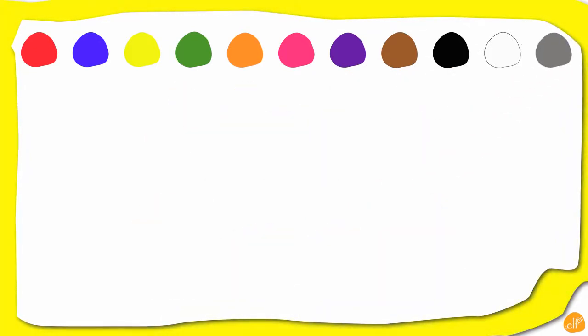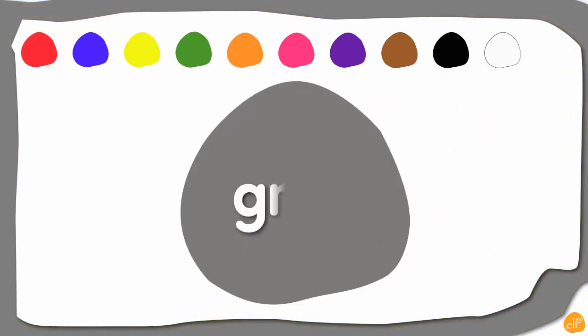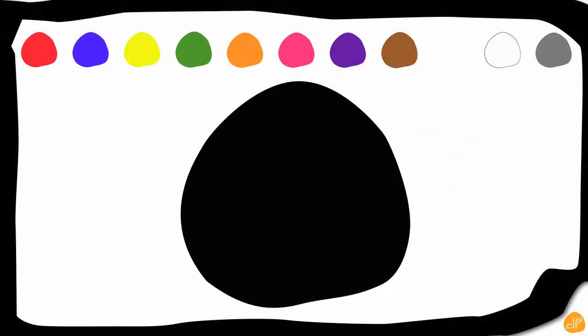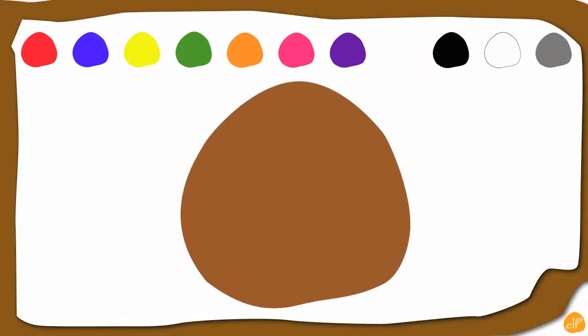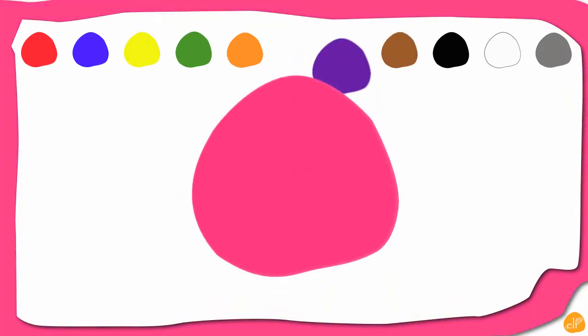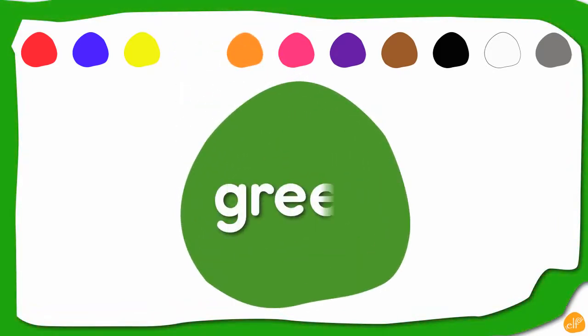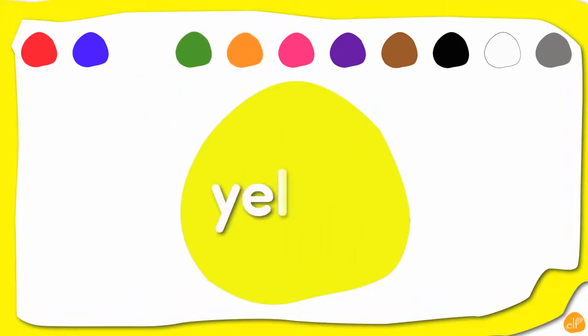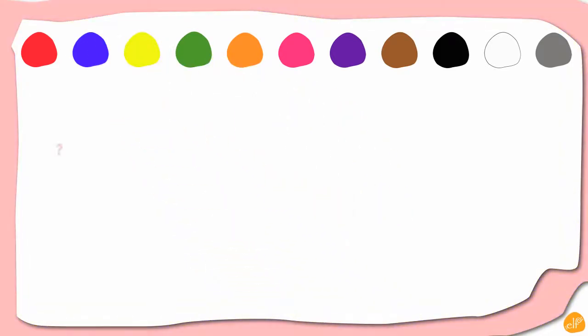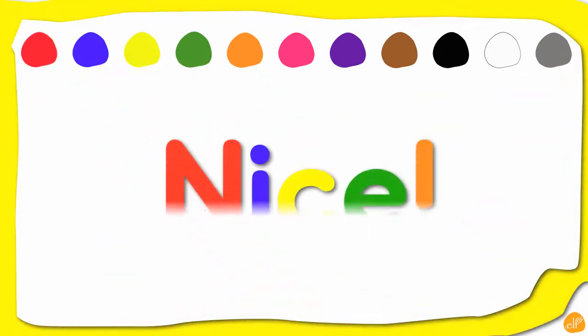Now let's try to say the colors backwards. Here we go. Gray. Gray. White. White. Black. Black. Brown. Brown. Purple. Purple. Pink. Pink. Orange. Orange. Green. Green. Yellow. Yellow. Blue. Blue. And one more. Red. Red. Nice.